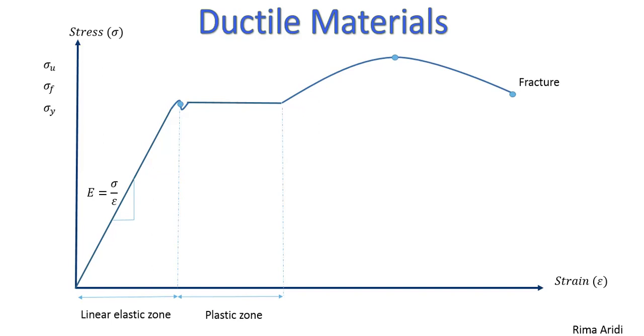Then, the plastic zone, here, the change in the shape is permanent. It's followed by strain hardening, where sigma increases until it reaches sigma U, sigma ultimate. Then, necking region, where the material becomes thin compared to its initial shape.